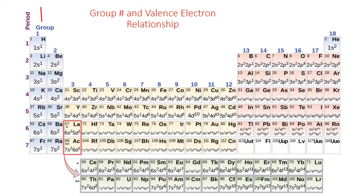In column 2, all of those elements have two valence electrons associated with a full S sublevel. Moving over to the other side of the periodic table, in column 13 we start filling the P sublevel — we still have our two valence electrons in the S sublevel, and then we add one to the P sublevel, giving us three valence electrons. Column 14 has four valence electrons, two in the S and two in the P sublevel. As we keep going across the columns, we keep adding one extra valence electron.